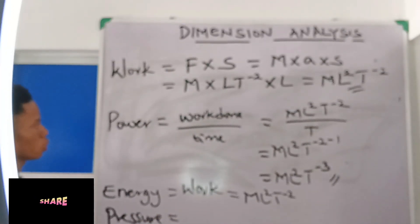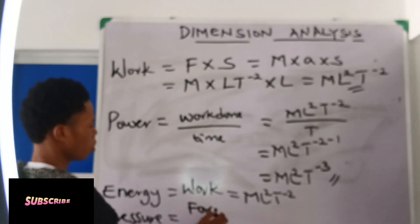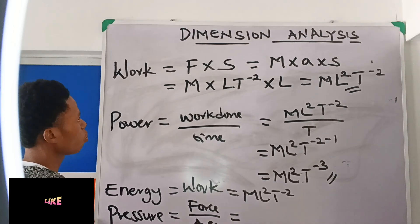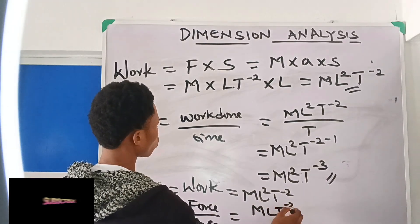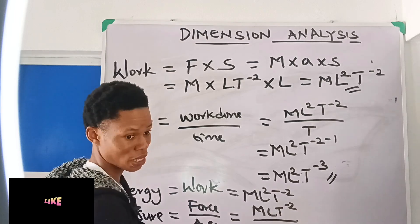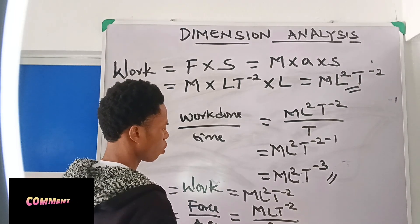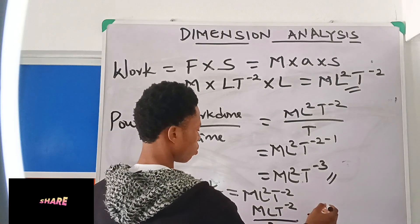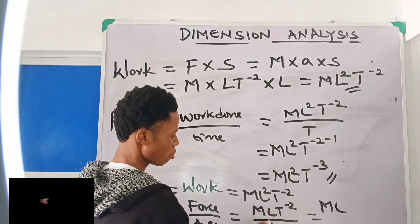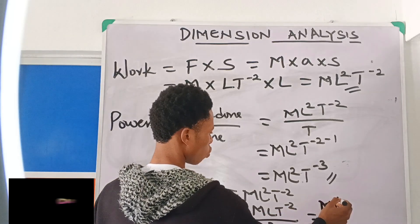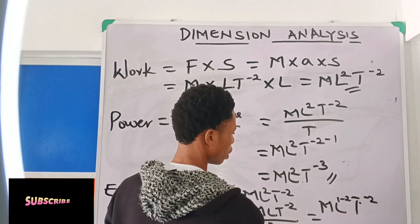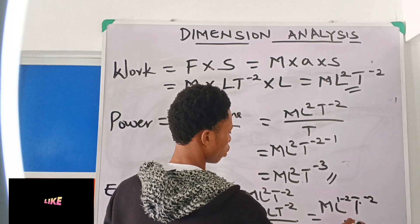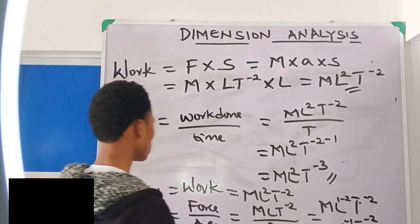Now for pressure — pressure is force by unit area. Force has dimension MLT⁻², and area is length times length, which is L². So pressure is MLT⁻² over L². Bringing L² up and subtracting powers: L¹⁻² = L⁻¹. So the dimension of pressure is ML⁻¹T⁻².